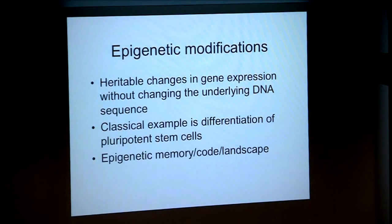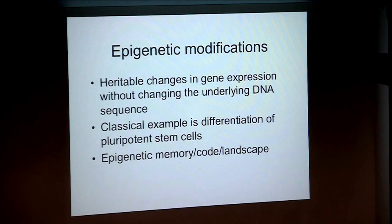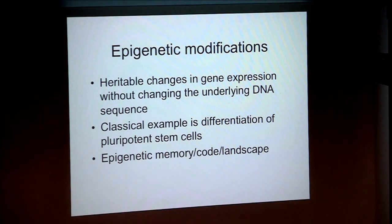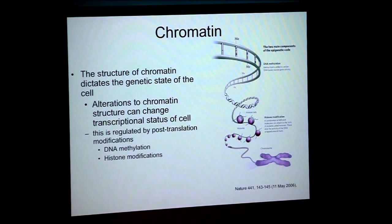I wanted to talk about what epigenetic modifications are. Basically, you can have heritable changes in gene expression that don't change the underlying DNA sequence — pluripotent stem cells are the classic example. There's been a lot of work on epigenetic memory and the epigenetic landscape, a very hot topic in the last ten years. The basic level of epigenetics is at the level of chromatin: alterations to chromatin can change the transcriptional status of the cell, mostly regulated by post-translational modifications. A key one is DNA methylation, which can lead to gene silencing, and also histone modification.